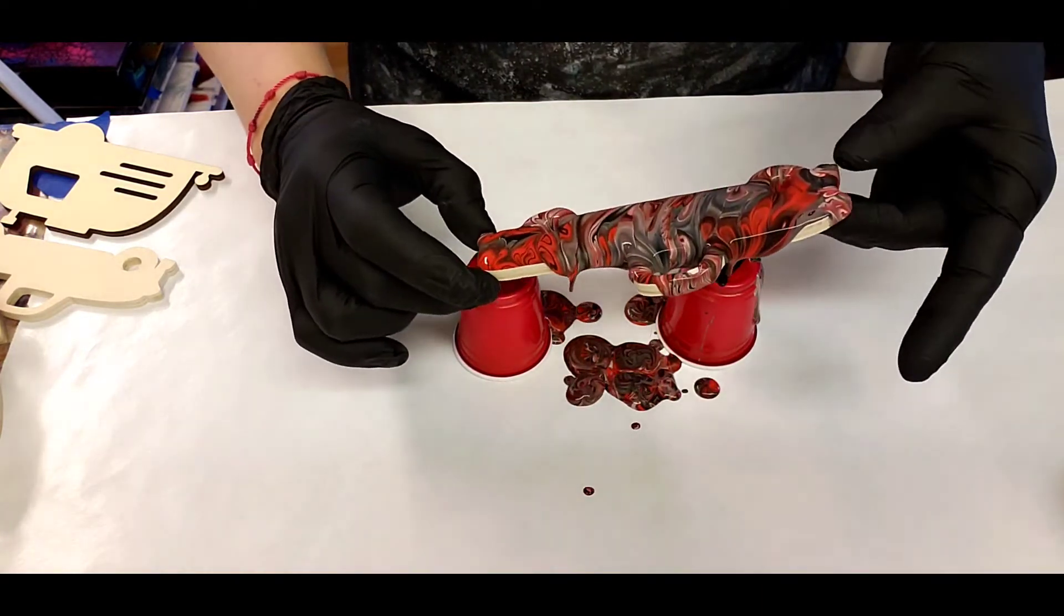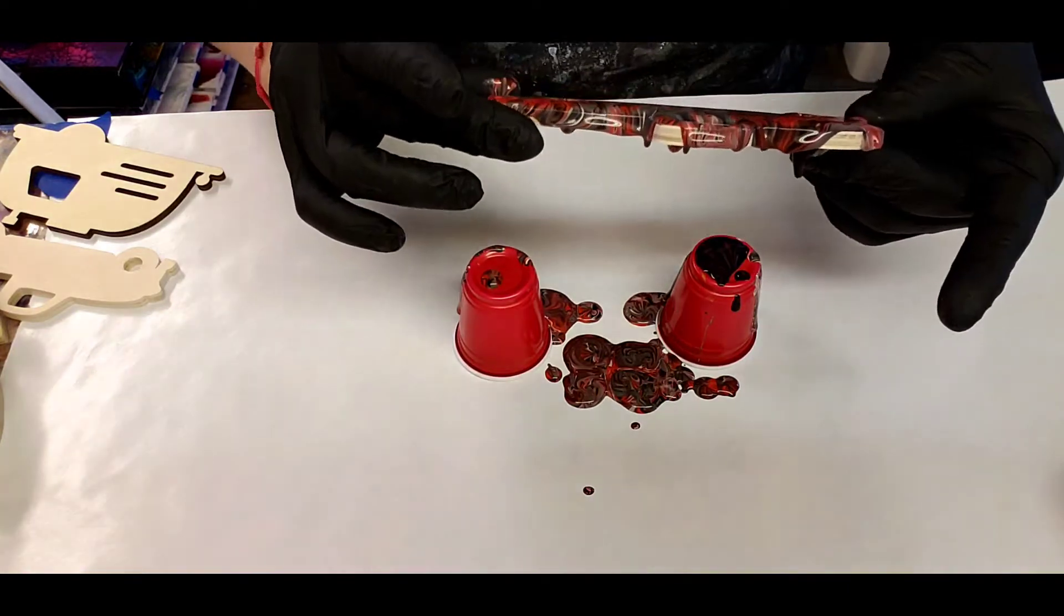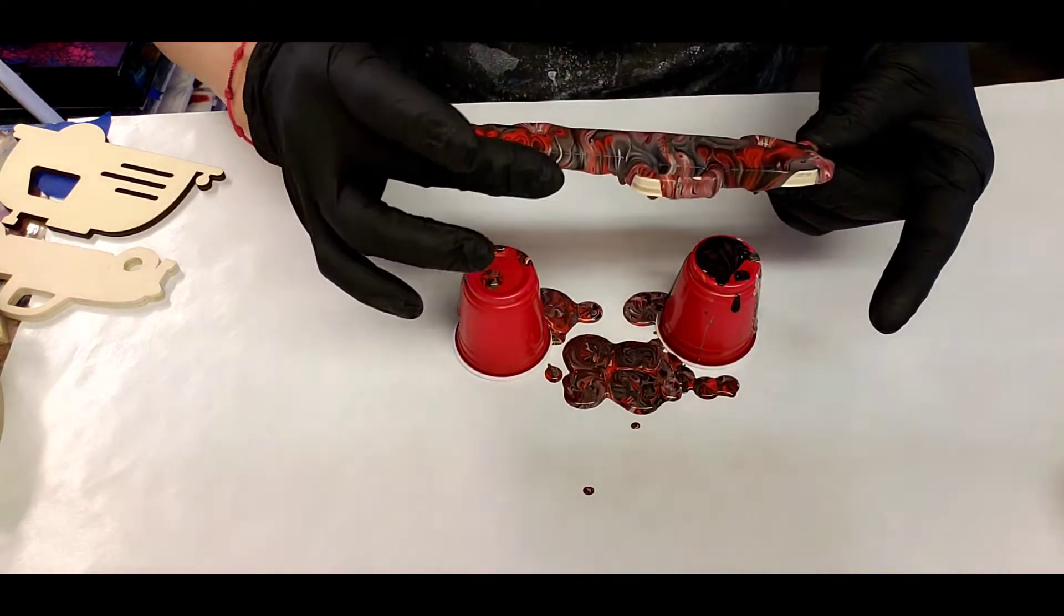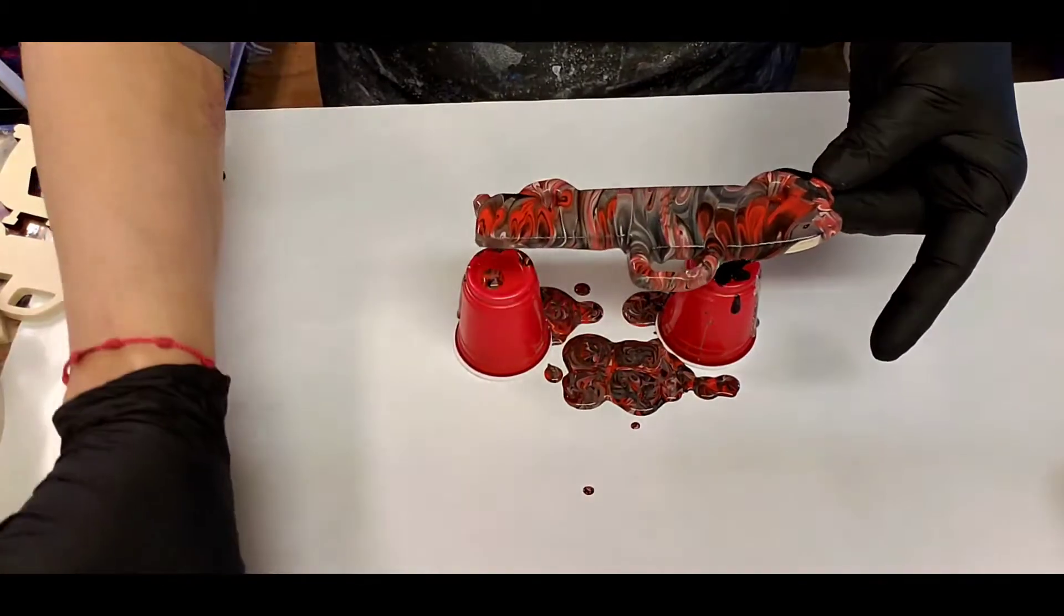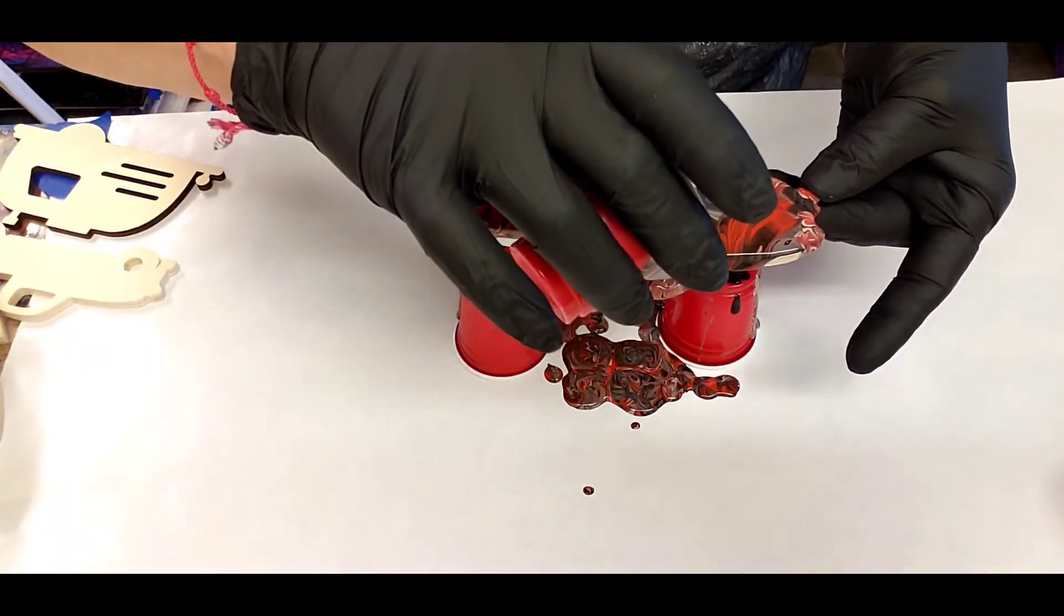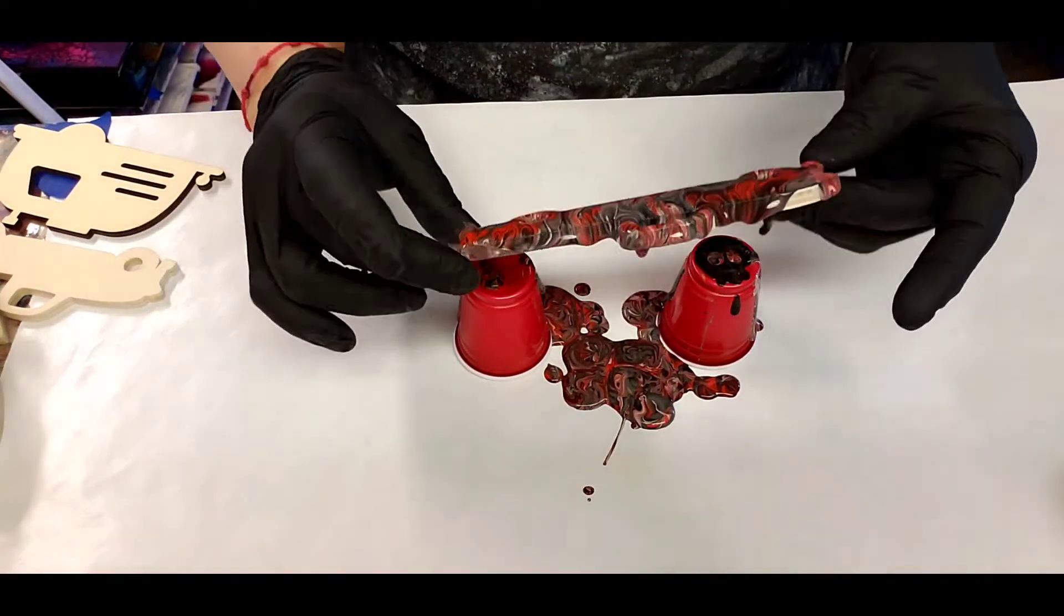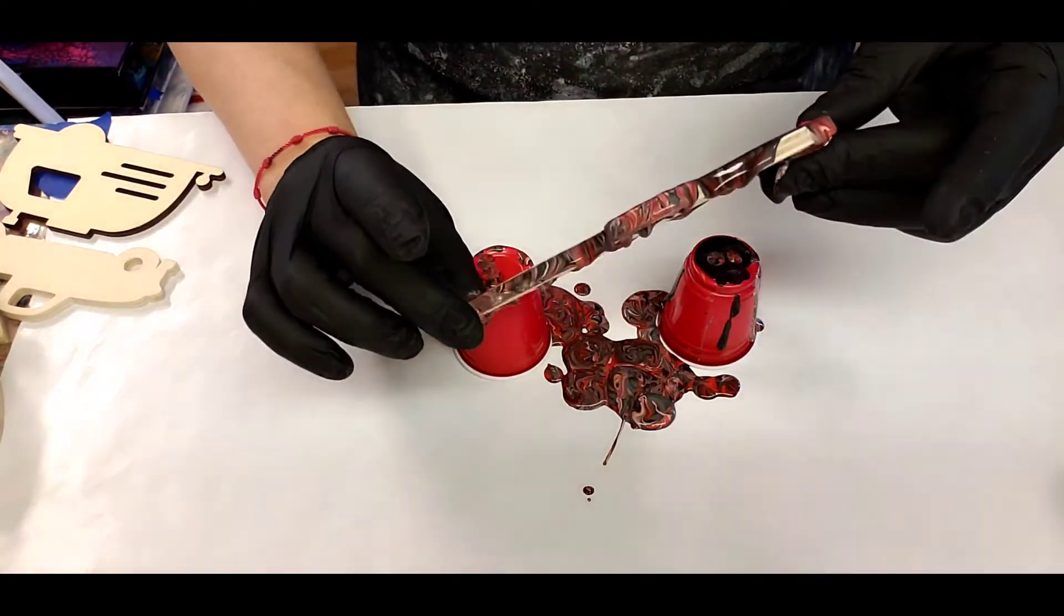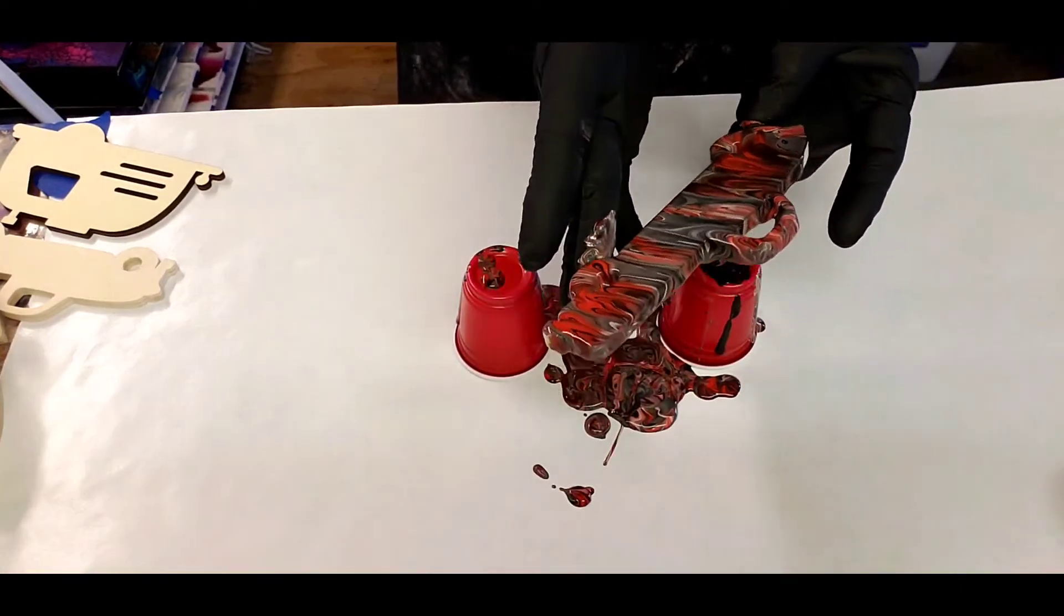So these are just wood cutouts I got from our local, like, well we call it a craft store, but it's kind of a little bit of everything liquidator store. These are actually by a company called Darius, D-A-R-I-C-E. They have a lot of craft items, but they're the ones who actually sell these.